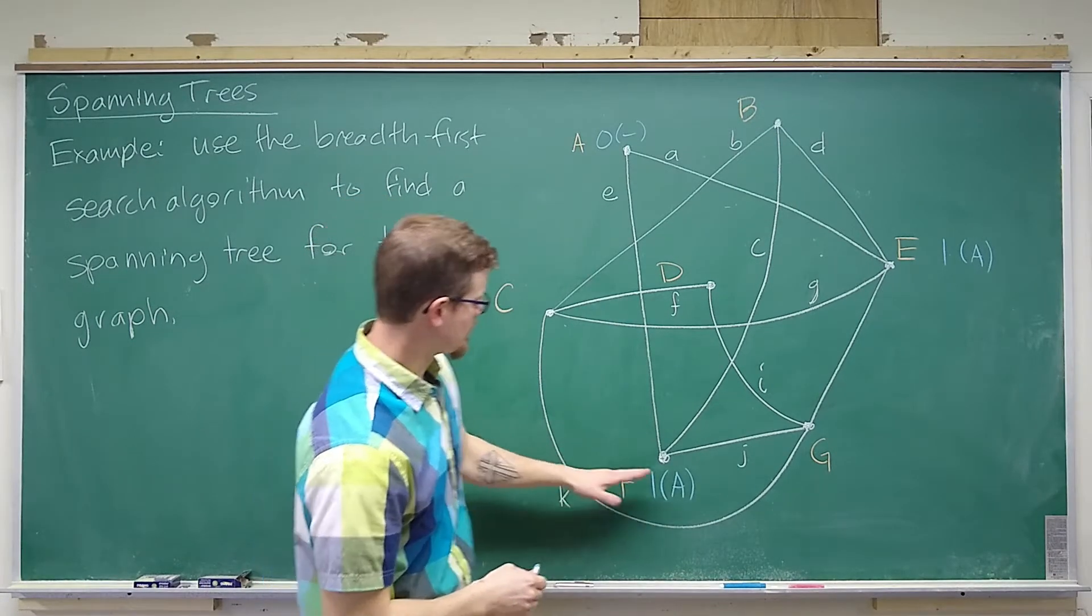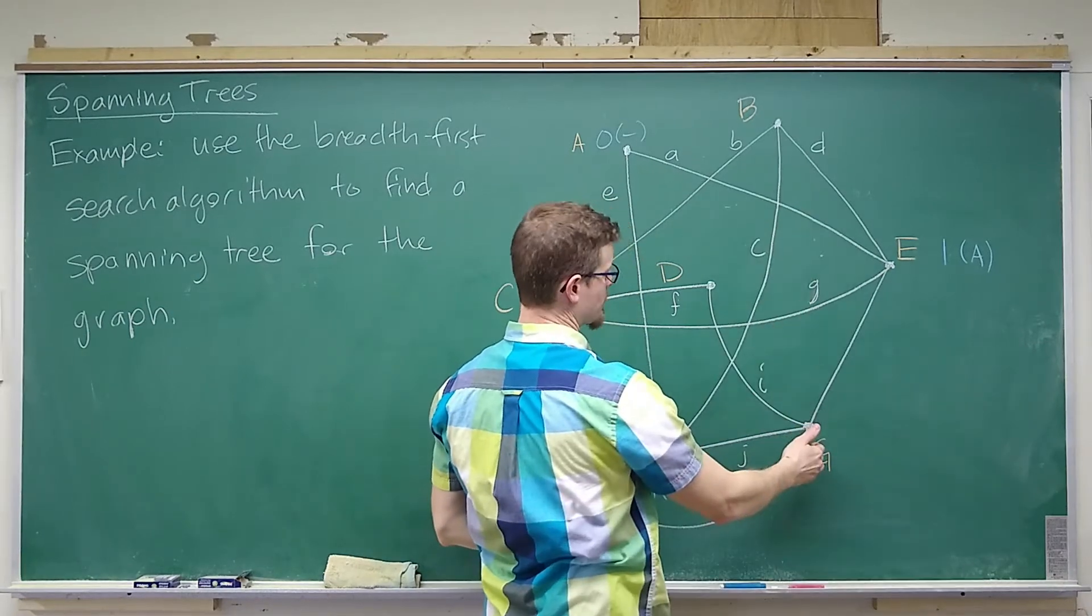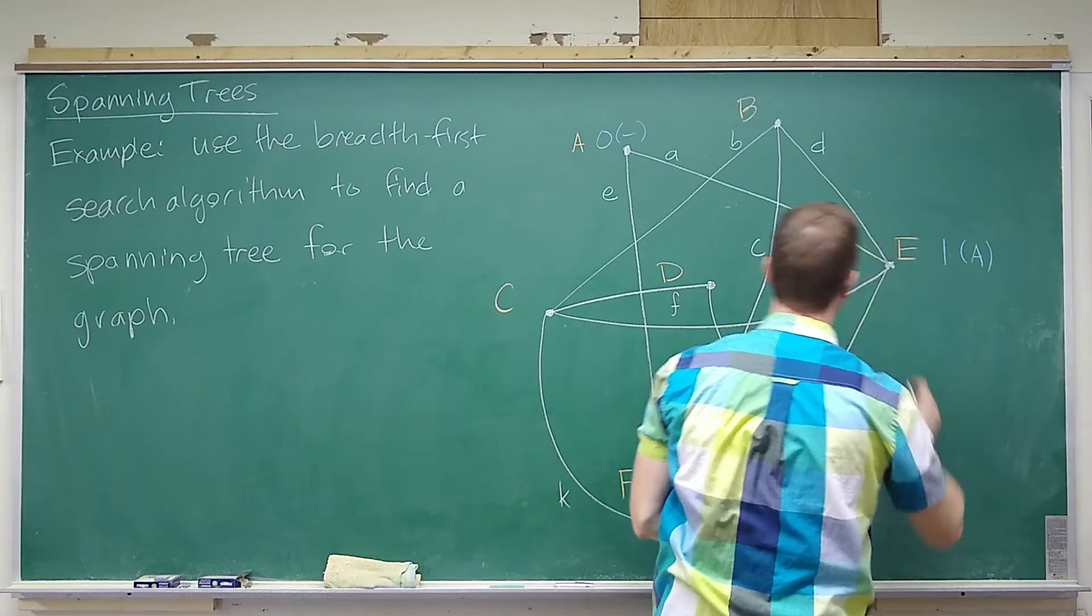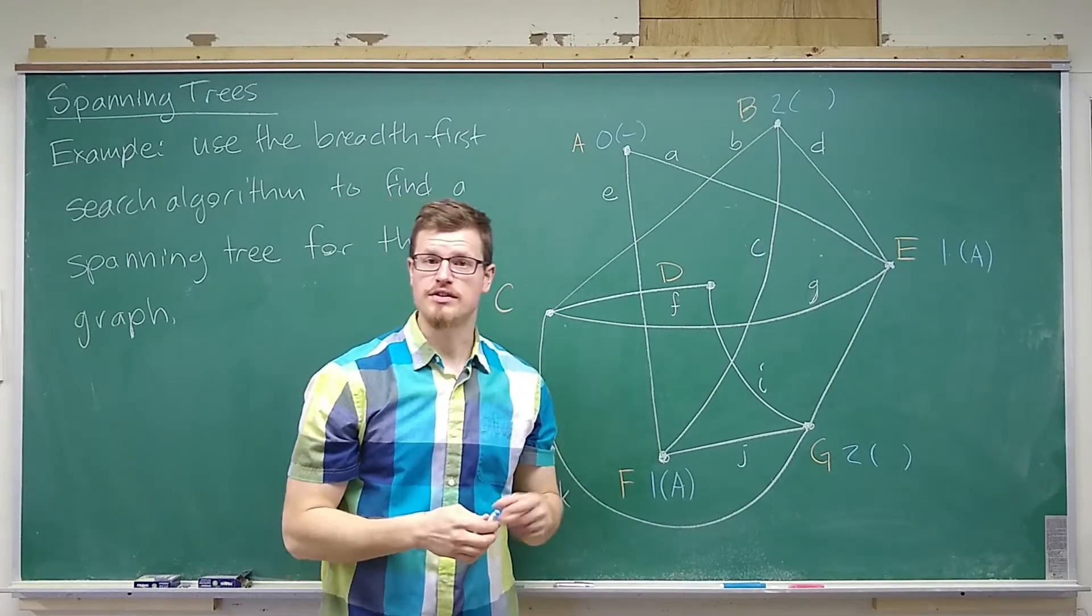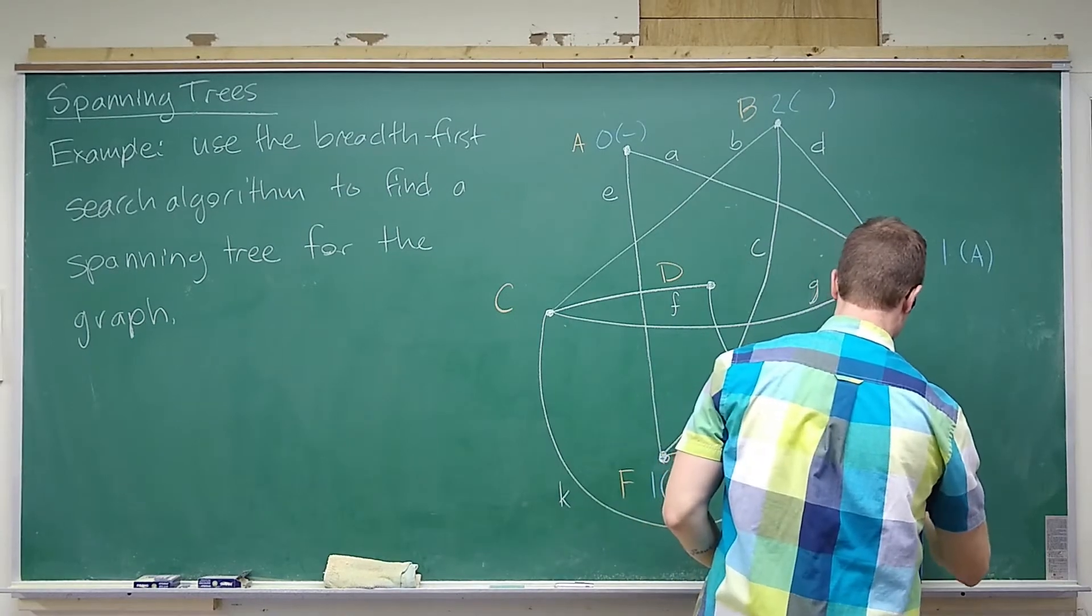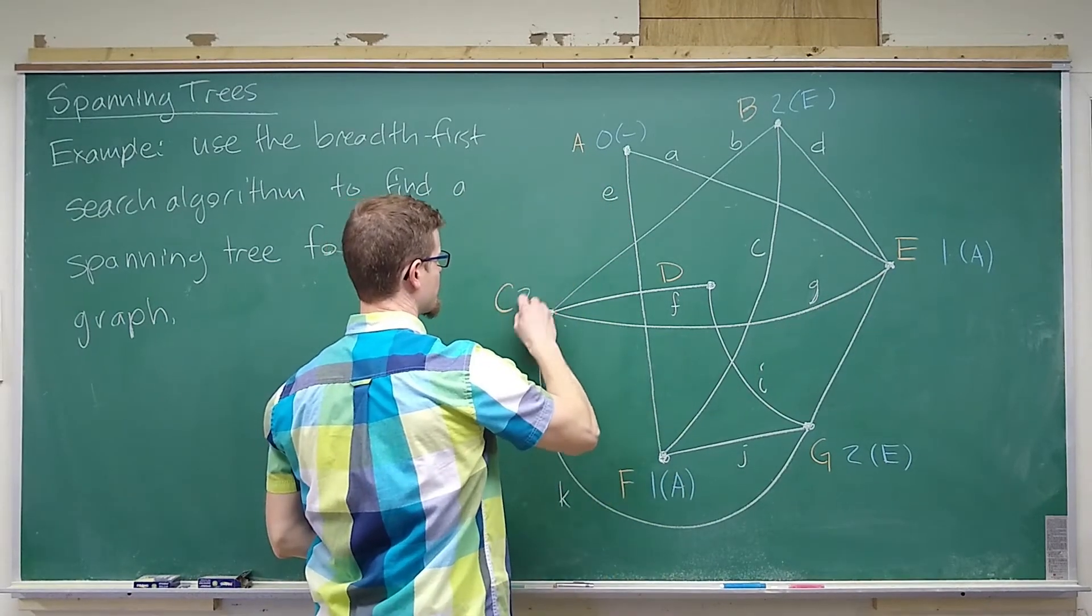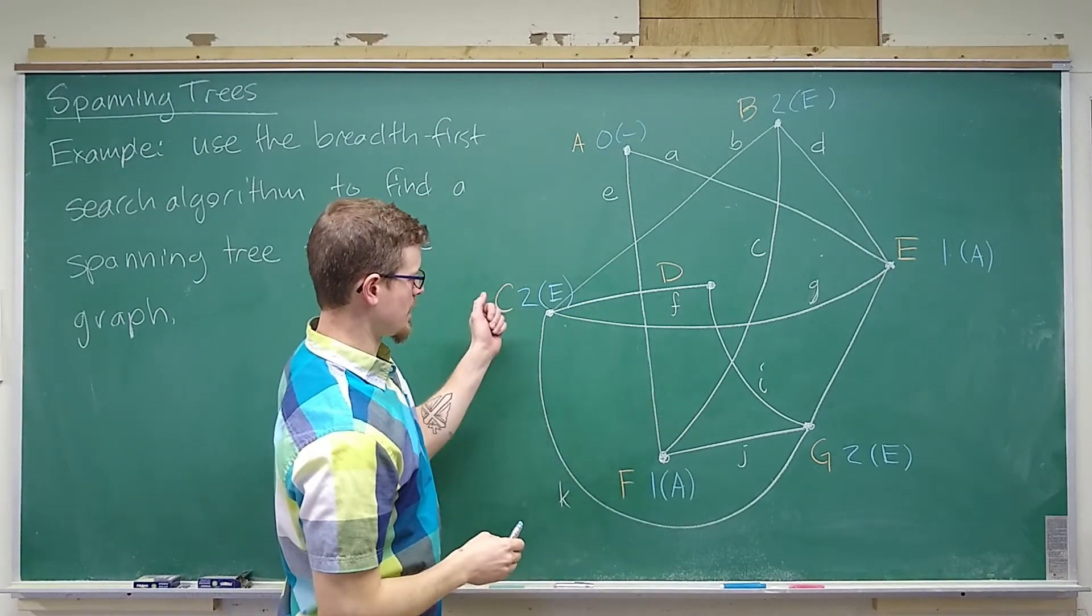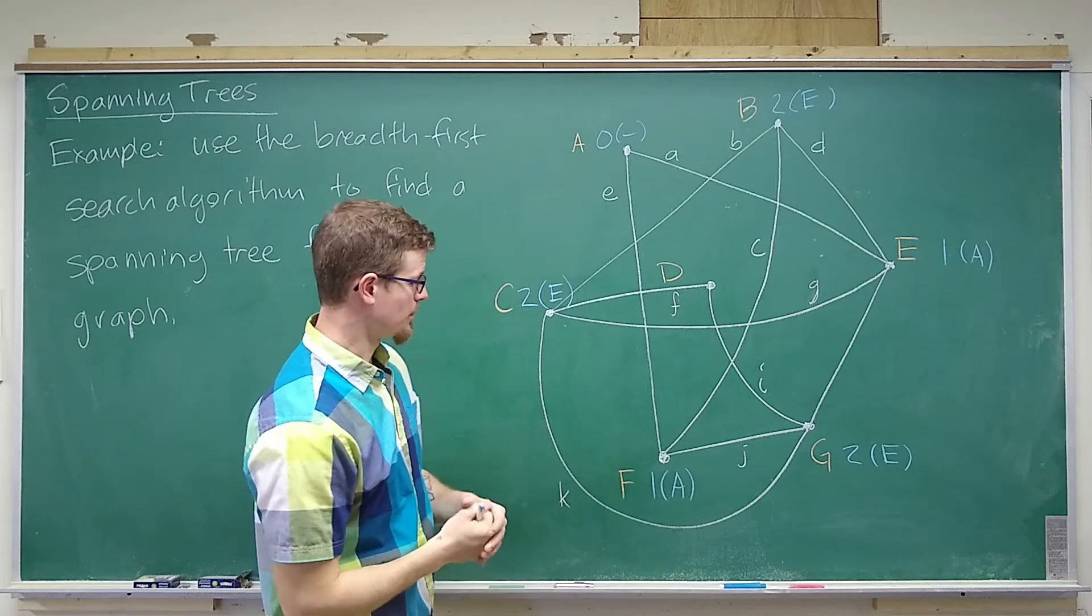We'll notice that adjacent to F are G and B, but those are both also adjacent to E. So both of these vertices are labeled with a distance of 2 from A. However, we have to make sure that we choose the appropriate predecessor. Choosing the one that comes first alphabetically, E comes before F, so E is the predecessor in both of these cases. E is also adjacent to C, so that means that C is a distance of 2 away with predecessor E.